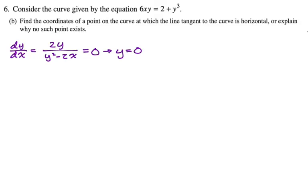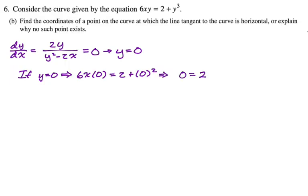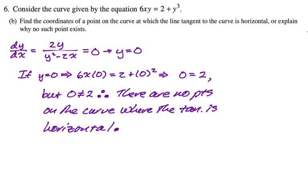We need to figure out if there's a point on the curve where y equals 0. Going back to our equation 6xy equals 2 plus y cubed, substituting y equals 0 gives 6 times x times 0 equals 2 plus 0 cubed, which implies 0 equals 2. Since 0 does not equal 2, there are no points on the curve where the tangent is horizontal.